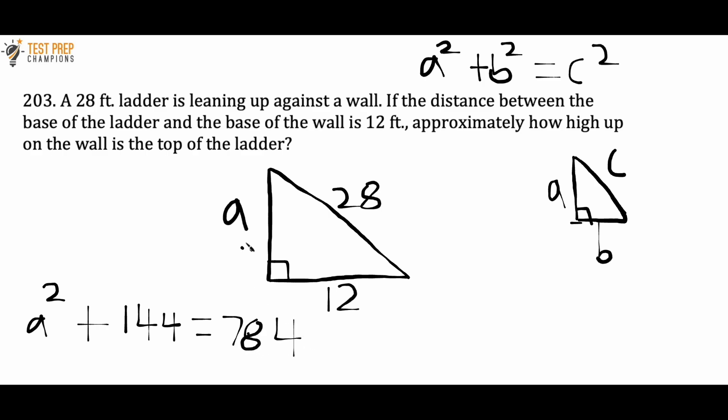So the name of the game here is to figure out the value of a, right? So what I'm going to do here is I want to get a squared by itself. So I'm going to subtract by 144 on both sides. And when I do that, the 144s cancel out on this side and over here we do 784 minus 144. And that gives us 640. So we figure out that a squared equals 640.